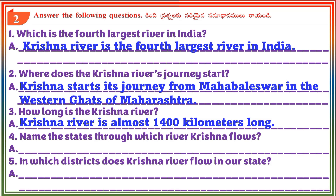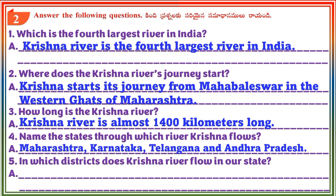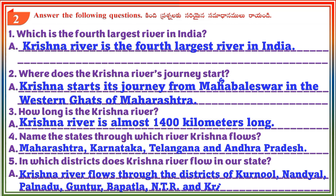Question 4: Name the states through which river Krishna flows. Answer: Maharashtra, Karnataka, Telangana and Andhra Pradesh. Question 5: In which districts does Krishna River flow in our state? Answer: Krishna River flows through the districts of Kurnool, Nandyal, Palnadu, Guntur, Bapatla, Eluru and Krishna in our state.